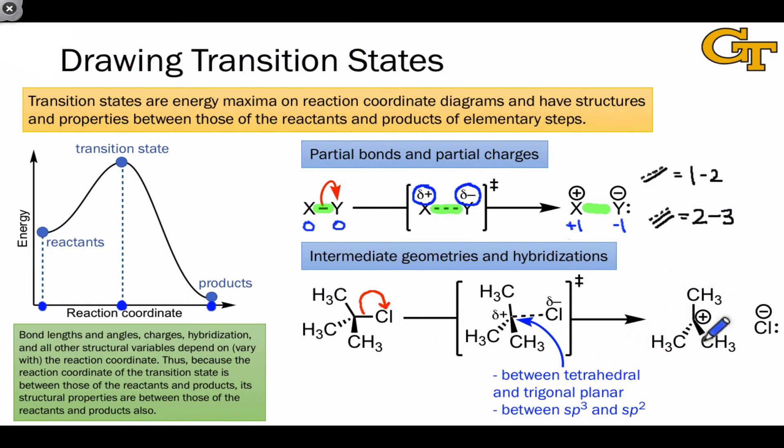The carbocation is trigonal planar and sp2 hybridized at the central carbon atom. But the carbon that becomes the positively charged carbon in the starting material starts out with sp3 hybridization.